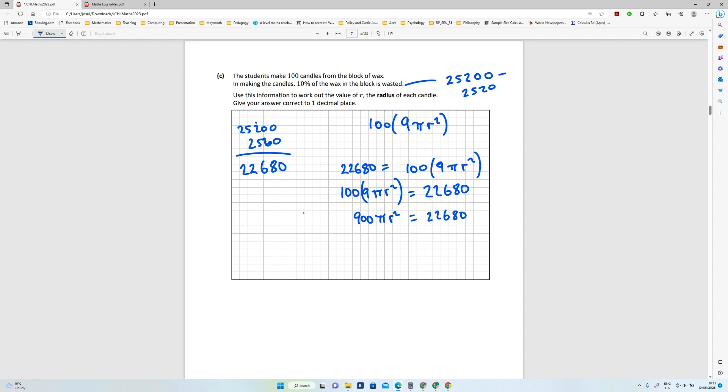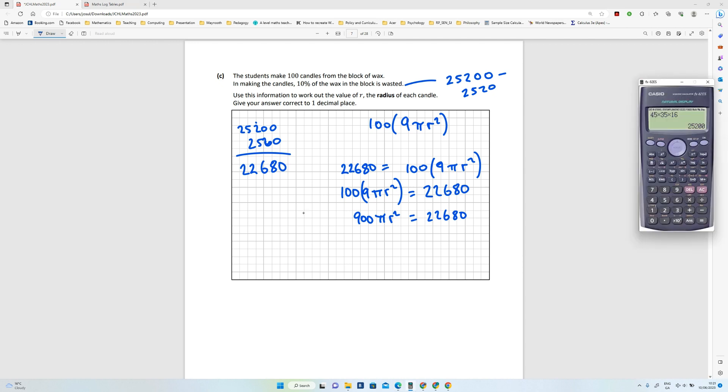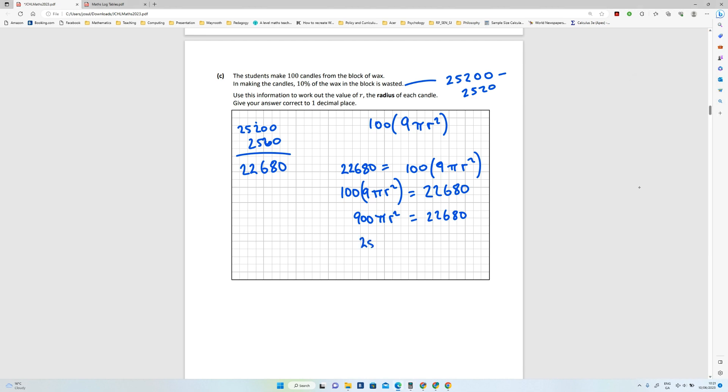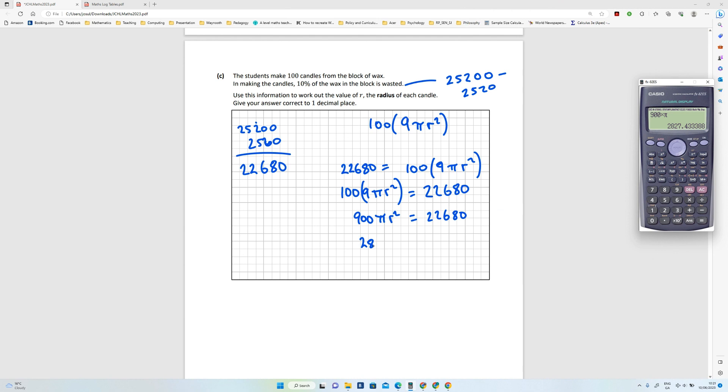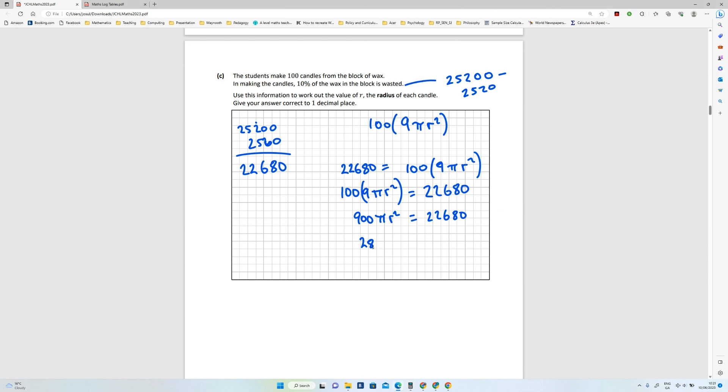So now π I can put into my calculator, so I'm going to do that. So I've got 900 multiply by shift π, and in this calculator I can turn that into a number if I want. So that's going to be 2827.43, so 2827.43r² equals 22680.